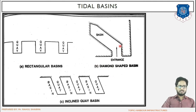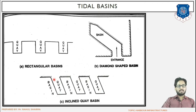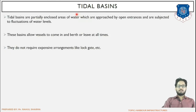Next is the diamond-shape basin, which represents a diamond shape with the basin space for accommodating or berthing of ships for carrying out loading and unloading operations. Last is the inclined-way basin, where the shoreline is at one end and the platforms are inclined. The quays — terminal facilities for loading and unloading cargo — are arranged along an inclined basin space.